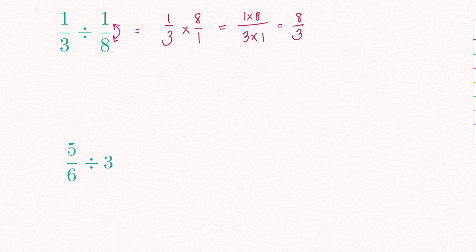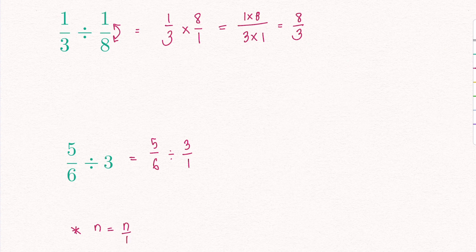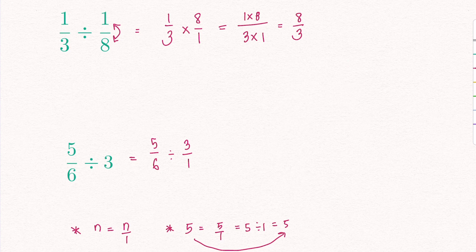In my next example, I have 5 over 6 divided by 3. Notice that this 3 is a whole number, and I want to first represent this 3 in fraction form — I simply put a 1 underneath. So it looks like 5 over 6 divided by 3 over 1. As a quick revision: any number can be written as that number over 1. For example, 5 can be rewritten as 5 over 1, which is 5 divided by 1, and that equals 5. Similarly, 7 can be written as 7 over 1.